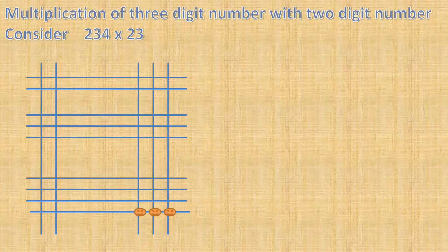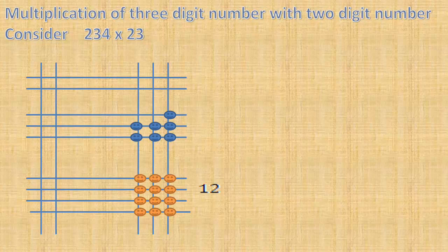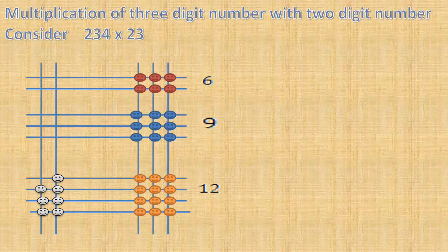Counting intersections: we get 12, then 9, then 6, then 8, then 6, then 4. Write down each of these intersection counts in their respective groups.